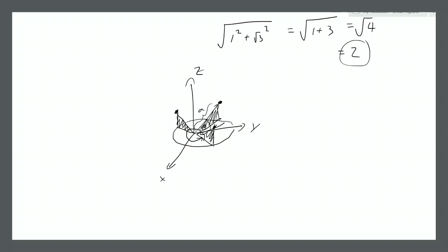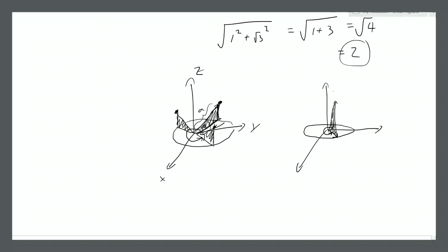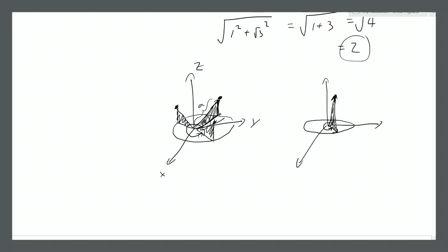One way to represent a point or vector in three-dimensional space is using the magnitude of the vector — which is the hypotenuse of the right angle triangle — along with some other angles. For example, you can talk about a distance from the origin, a distance upward, and then an angle for where that triangle is based. So you can represent a coordinate using the angle from the base up, and the angle around.